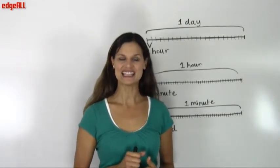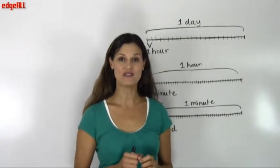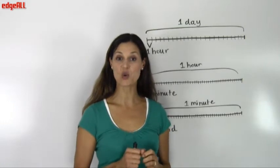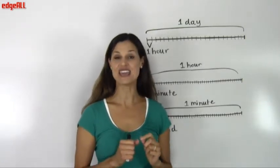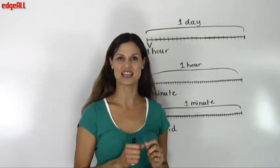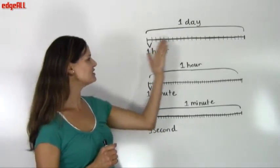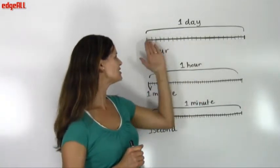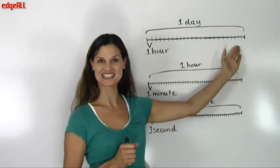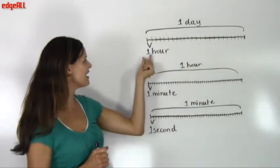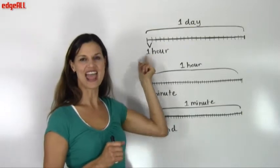If you divide the length of a day into twenty-four equal sections, the length of each section is one hour.